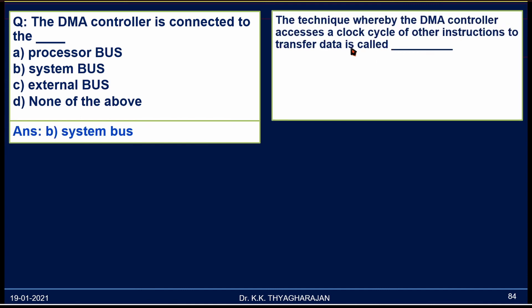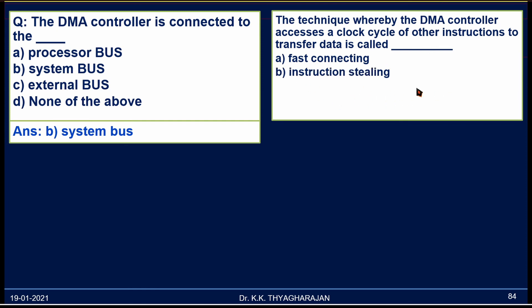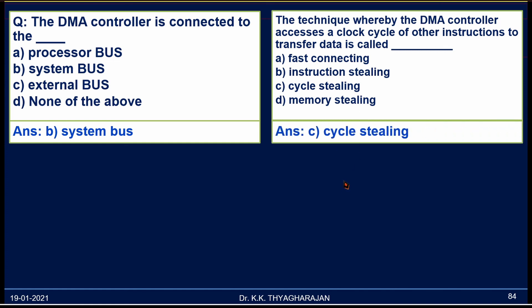The technique whereby the DMA Controller accesses clock cycles of other instructions to transfer data — as discussed, in each instruction some clock cycles will not be used by the CPU, and those clock cycles will be used by the DMA Controller to transfer data. That method is called Cycle Stealing. The choices are: A) Fast Connecting, B) Instruction Stealing, C) Cycle Stealing, D) Memory Stealing. You may be tempted to choose Instruction Stealing, but it is Cycle Stealing. The correct answer is C.